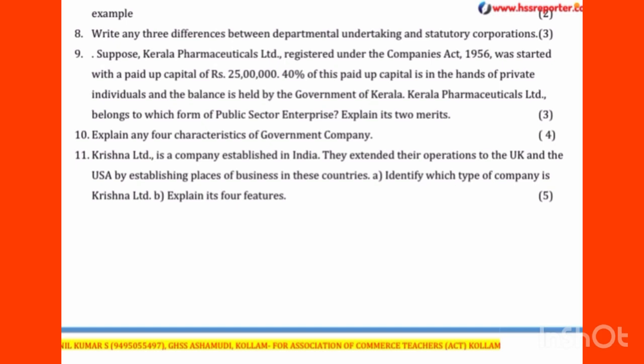A very important question: Krishna Limited is a company established in India. They extended their operations to the UK and the USA by establishing places of business in those countries. Identify which type of company Krishna Limited is and explain its four features. Krishna Limited is a Multinational Company. Its features are: huge capital, foreign collaboration, advanced technology, international market, product innovation, market strategy, and centralized control.